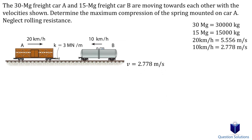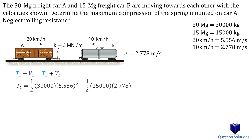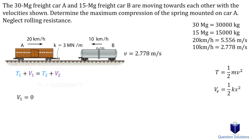Now to figure out the compression of the spring, we need to use the conservation of energy. Let's break each component into pieces. T1 is the initial kinetic energy of each of the cars — kinetic energy is one-half times mass times velocity squared. V1 is the elastic potential energy, which is zero since the springs are not compressed or elongated.